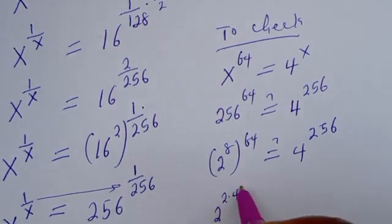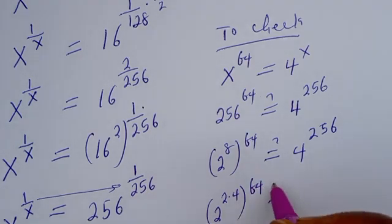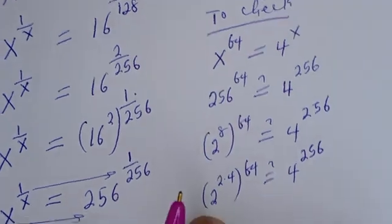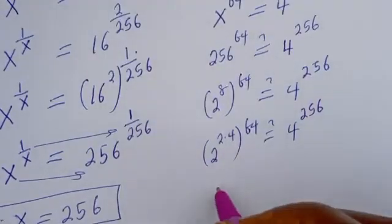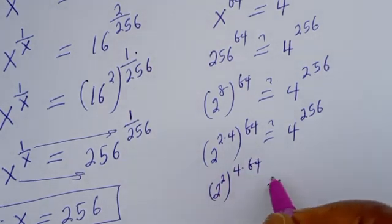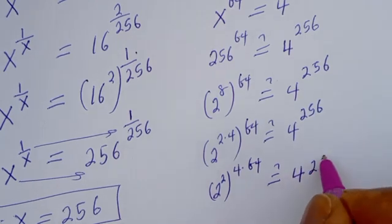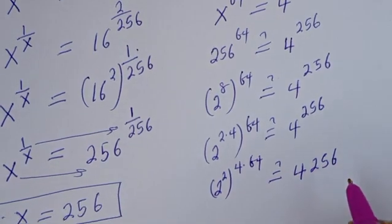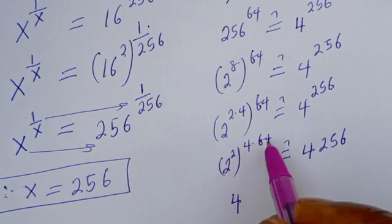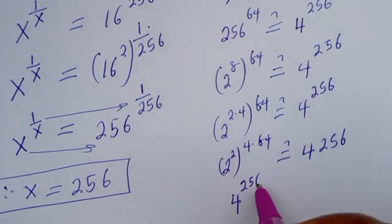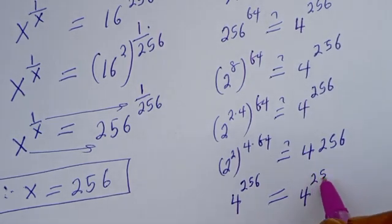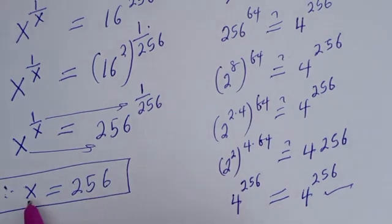Then this is 2 to the power of 2, multiplied — raised to the power of 4 times 64 — must equal 4 to the power of 256. This can be written as 2 squared, to the power of 4 times 64, must equal 4 to the power of 256. Since 2 squared is 4, we have 4 to the power of 256 equals 4 to the power of 256, which is true. So s equals 256 is confirmed.